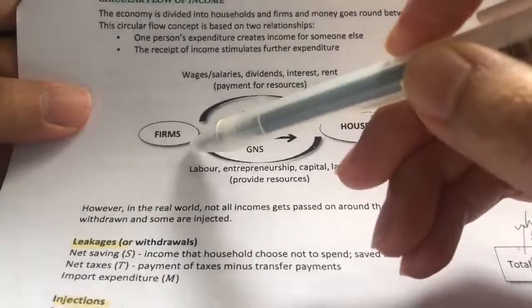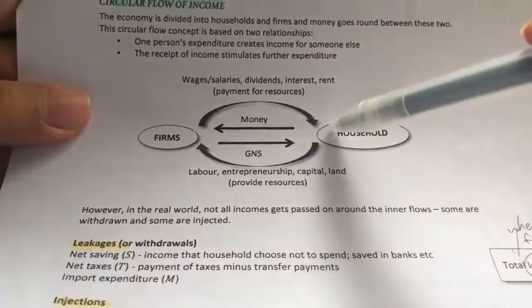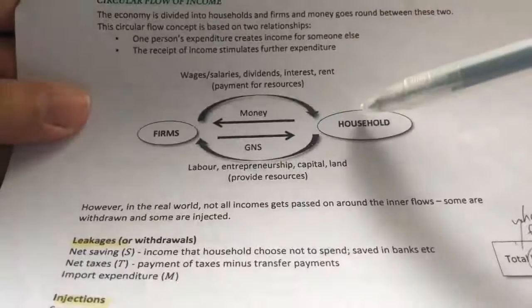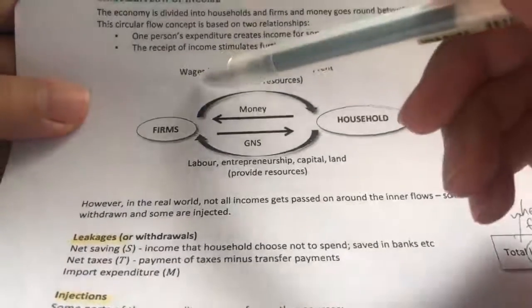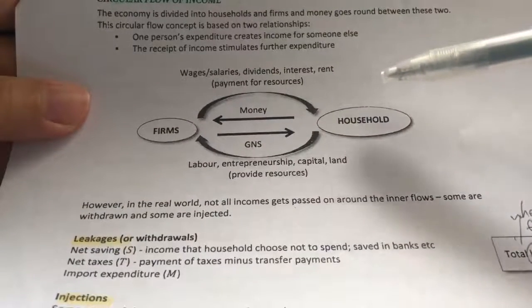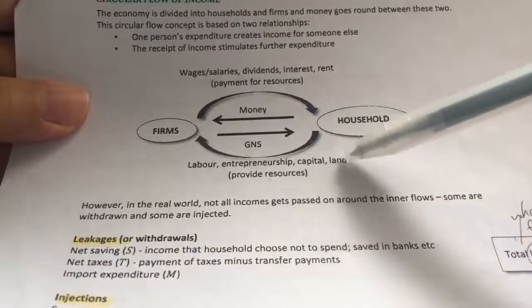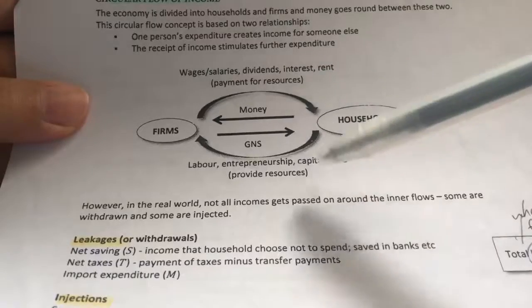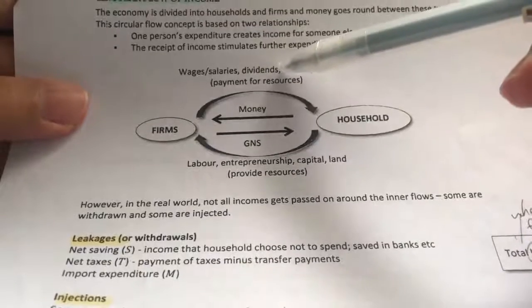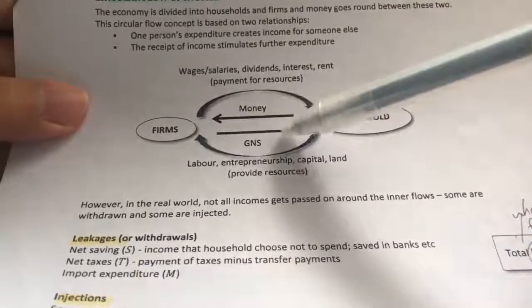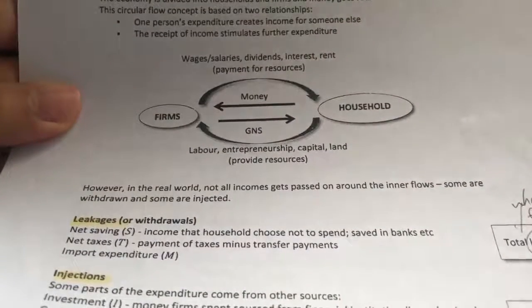We provide those resources to the firms. In turn, the firms will pay us for our resources. What do we get? If we have labor, we get wages and salaries. If we have entrepreneurship abilities, we get profits or dividends. If we have land, we get rent. If we own capital, we get interest. With the money that we get, we can use it to buy goods and services. All of this is assumed to be in an ideal world.